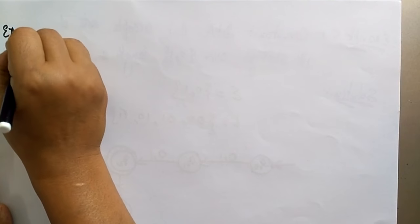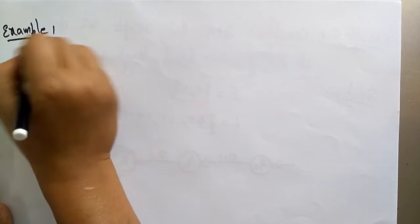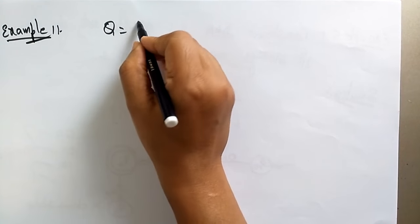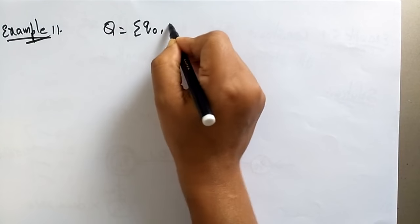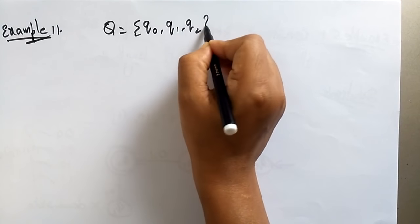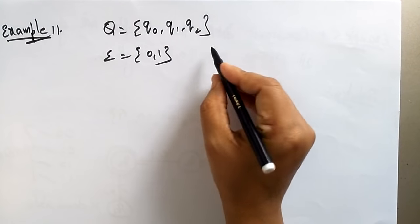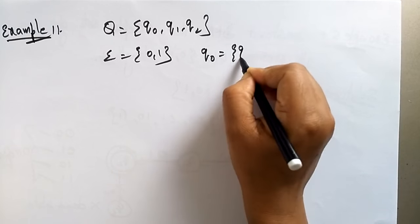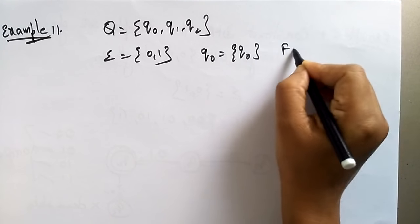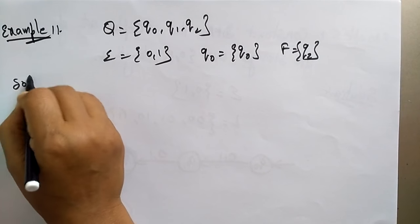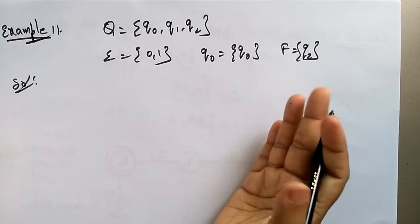Welcome back. Let's continue with the NFA. In the previous video I explained what NFA is. Now let's take some examples. In the questions they directly state the NFA is consisting of two states or three states with input symbols 0 and 1, giving the initial state as q-naught and the final state as q2. From this you can construct the state transition diagram.